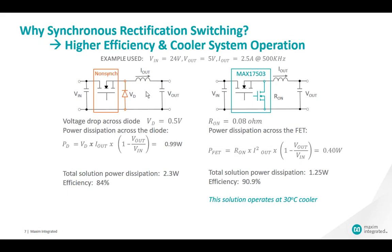Why synchronous rectification? The schematic on the left is a non-synchronous buck converter where a diode conducts the inductor current during the off time. In this example, the diode has a voltage drop of 0.5V when conducting 2.5A, resulting in 1W power dissipation. The power dissipation equals VD times output current times (1 minus VOUT/VIN), which is 1 minus the duty cycle. That comes out to about 1W.